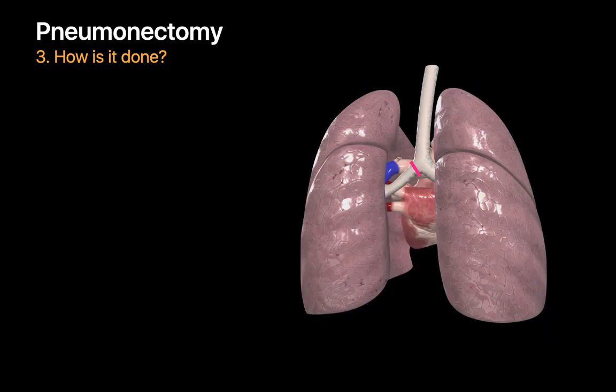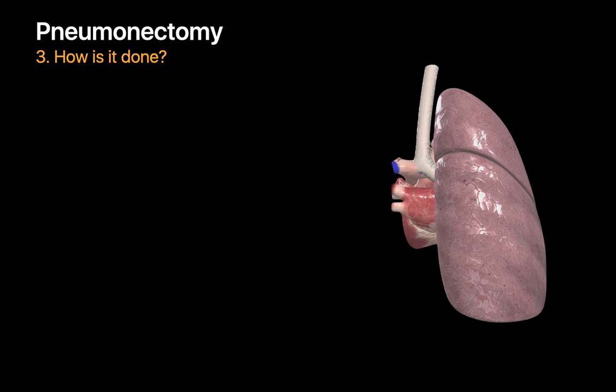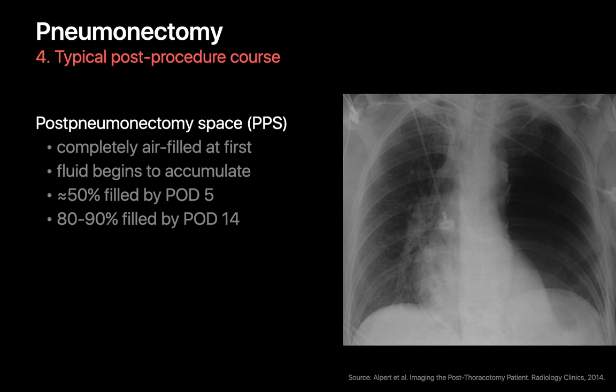In a pneumonectomy, the mainstem bronchial, pulmonary arterial, and pulmonary venous connections between the lung and the rest of the body are severed, the lung is removed, and the chest wall closed. Removing an entire lung results in an empty rib cage on one side — the post-pneumonectomy space. While initially completely air-filled after surgery, fluid gradually accumulates over time, replacing about half the air by post-op day 5 and 80–90% of the air by two weeks.